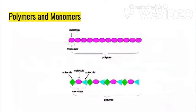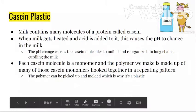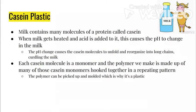Casein plastic is very similar to just a single monomer repeating the same pattern — it mostly represents that first picture. Milk contains many molecules of a protein called casein. When milk gets heated and acid is added, this causes the pH to change in the milk.